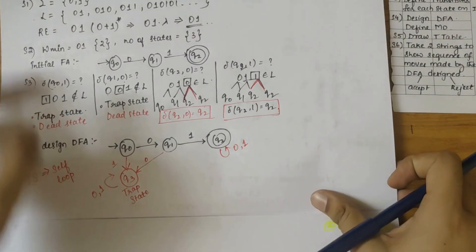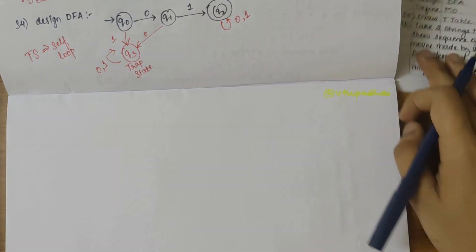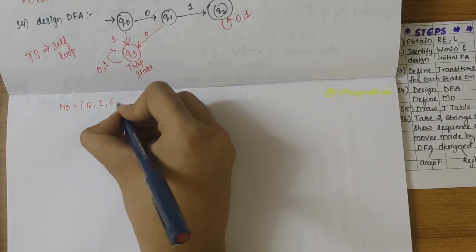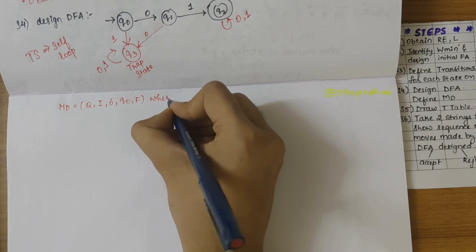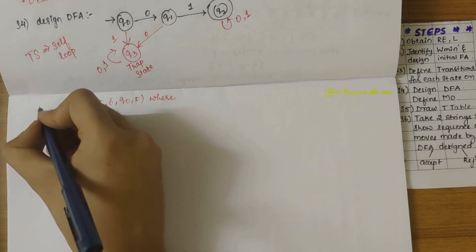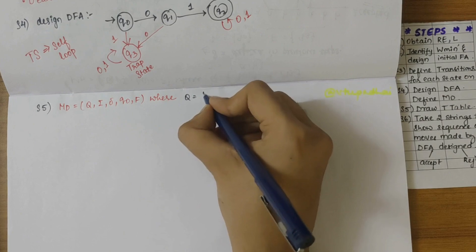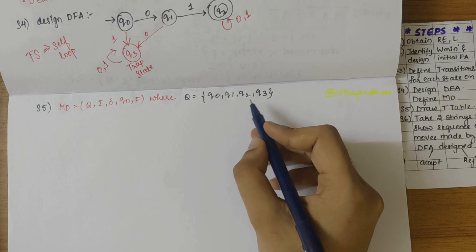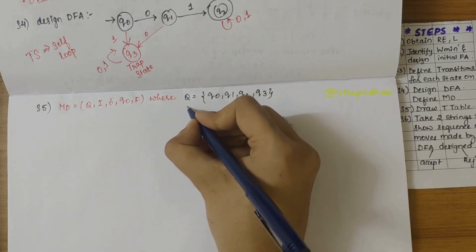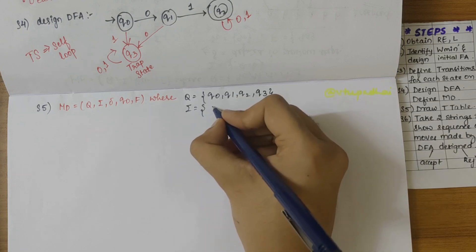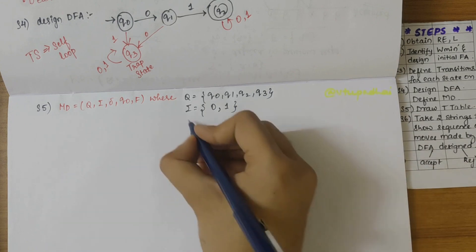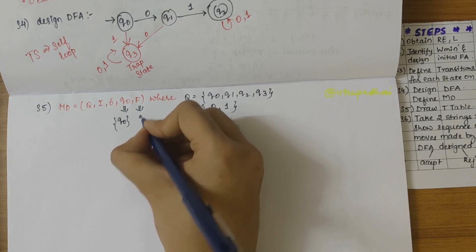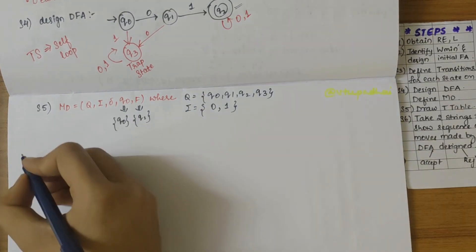Now let's find the MD values. We can write it as MD = (Q, sigma, transition, q0, F), where Q is all states involved — q0, q1, q2, and q3 (the trap state, which is also part of the DFA). Sigma is {0, 1}, q0 is the initial state, and the final or accepting state is q2.